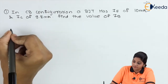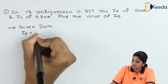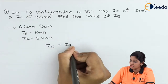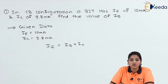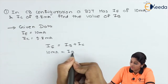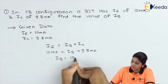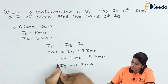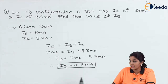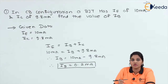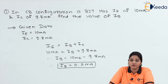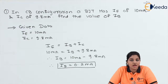The emitter current and collector current values are given and we need to find the value of base current IB. We know that IE = IB + IC. Substituting the values, IB = IE − IC = 10mA − 9.8mA = 0.2mA. This proves that the value of IB is very small compared to collector current. Therefore, when we consider NPN or PNP transistor practically, we always consider emitter current approximately equals to collector current. This is what covers the various currents that flow through the transistor and the example based on this.